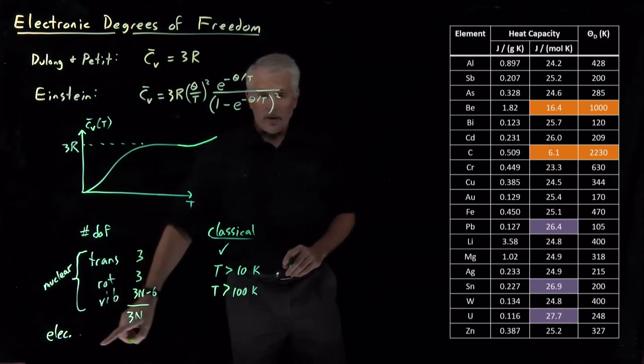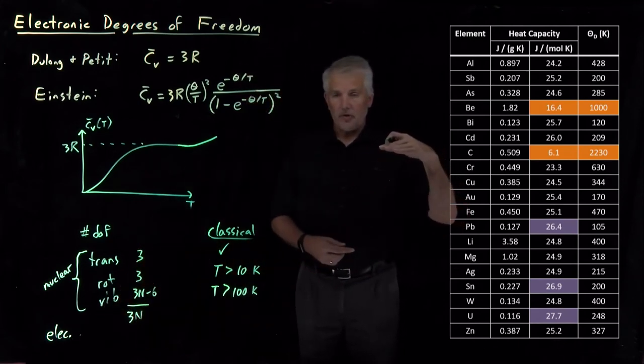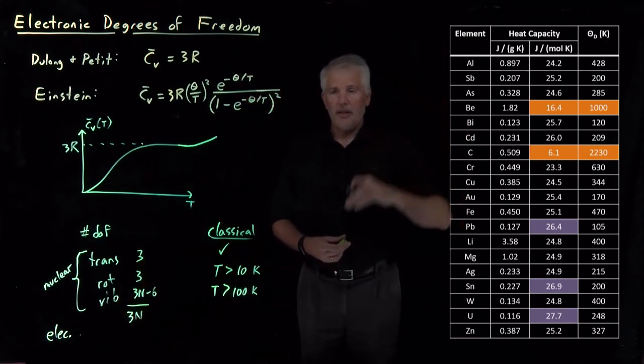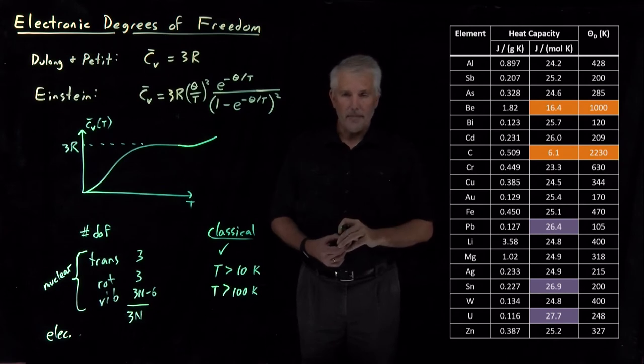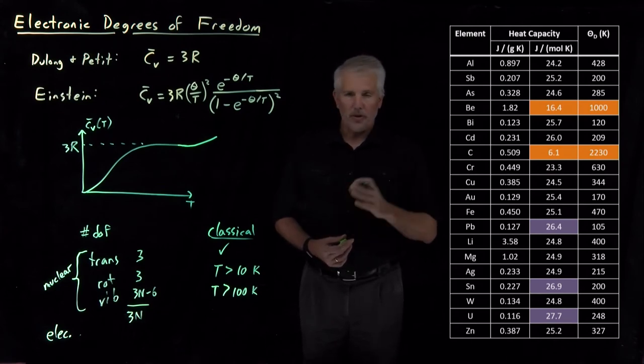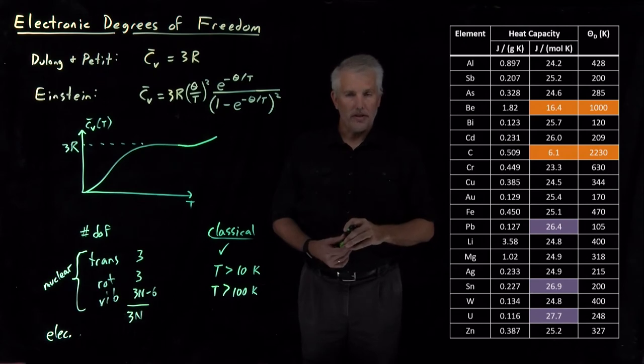The electronic degrees of freedom, the excitations to lift molecules from one electronic state up to the other because electrons are so light in mass. Those excitations are so high in energy, usually taking visible or ultraviolet photons, for example.